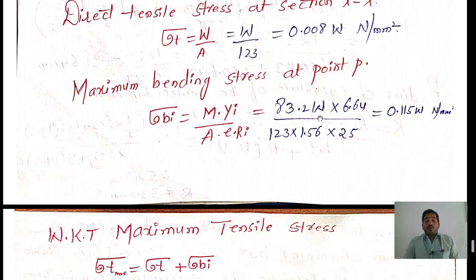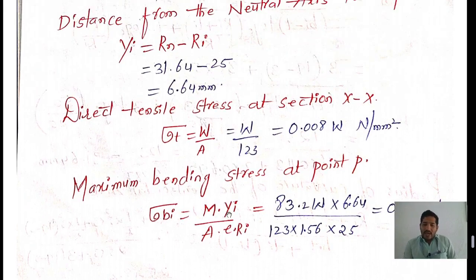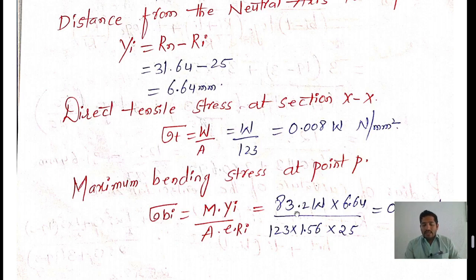Our intention is to find the maximum bending stress at the inside fiber (point P). Using the formula: bending stress = M·Yi / (A·E·RI) = 83.2W × 6.64 / (123 × 1.56 × 25) = 0.115W N/mm².